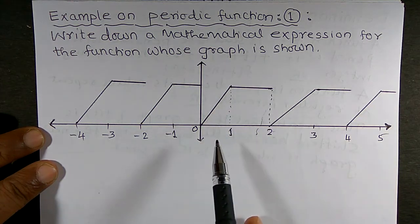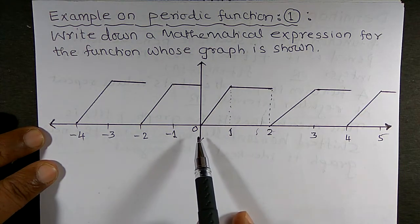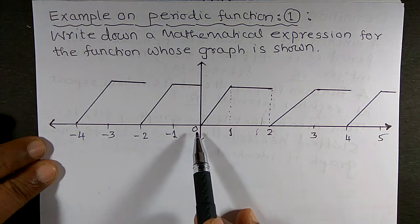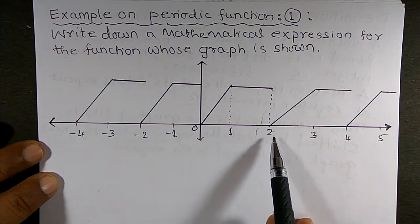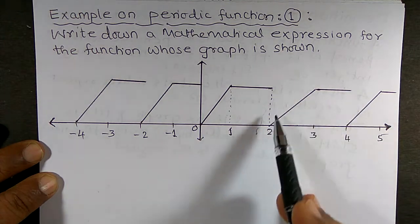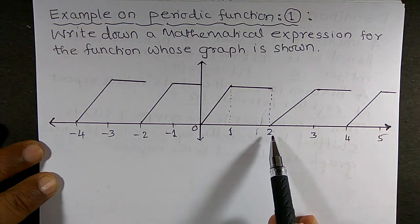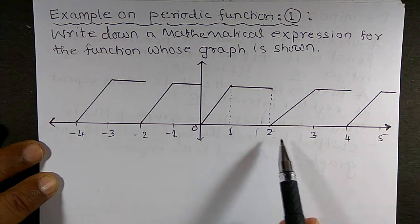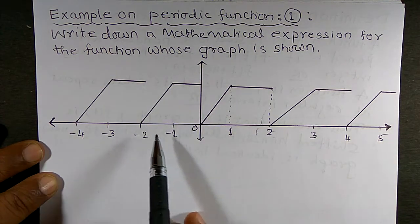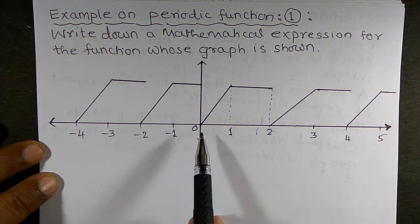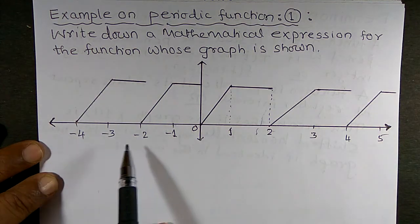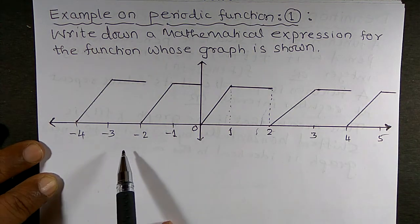Now I want to observe what the interval is. You can observe this graph lies in the interval between 0 and 2. When you consider the next part of the graph, it lies between 2 and 4. Or if you consider this graph, it lies between minus 2 and 0. And this graph lies between minus 4 and minus 2.